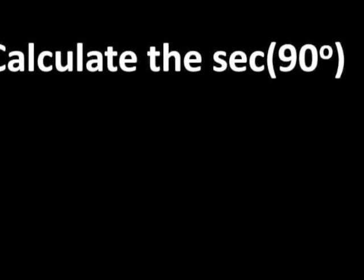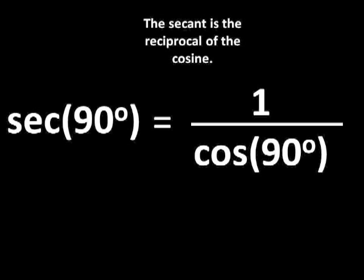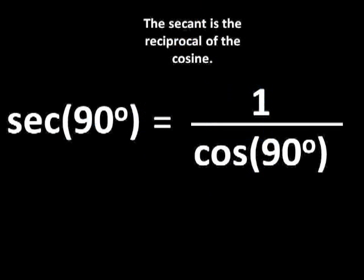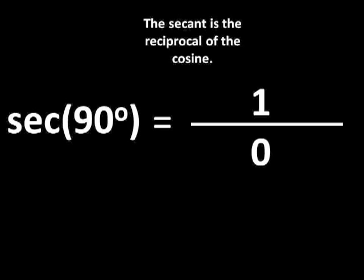You're doing great, baby girl. Let's look at question 3. It says calculate the secant of 90 degrees. Okay, the secant is the reciprocal of the cosine, and the cosine of 90 degrees is 0. The reciprocal of 0 is 1 over 0 — and 1 over 0 is equal to 0. Dad, I got you. I was only joking.